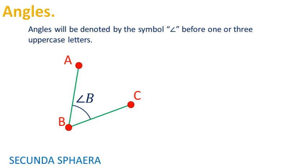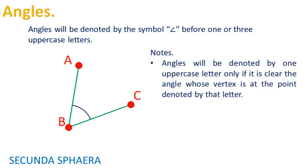The style of only one uppercase letter will only be used if it is clear the only angle whose vertex is at the point denoted by that uppercase letter. Here is a drawing showing an example where this notation would be ambiguous. Most of the time this style of notation will be deprecated, even though it may get used.